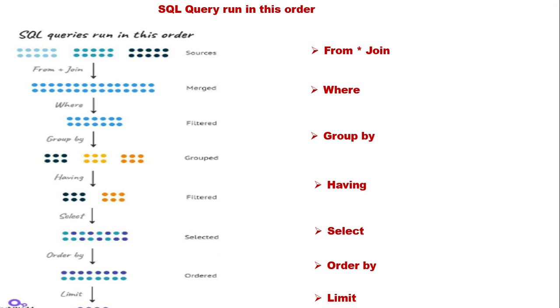Next, the SQL query runs in this order. Whenever you are firing a query, the order should always be: FROM, JOIN, WHERE, and GROUP BY. FROM specifies the sources, WHERE clause filters and merges the data, and GROUP BY groups the data.